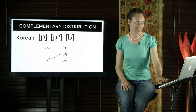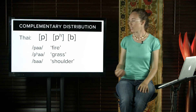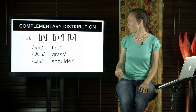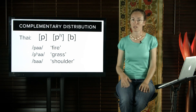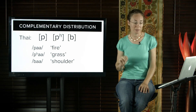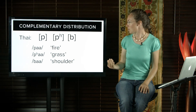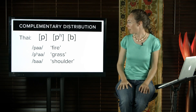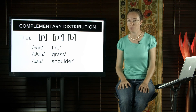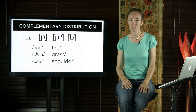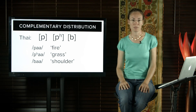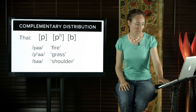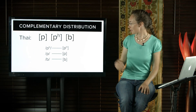In Thai it's a different story again. Thai also has the three sounds p, aspirated p, and b. But in Thai all three make a difference for meaning: p means fire, aspirated p means grass, and 'bah' means shoulder. So all three are separate phonemes in Thai, and the three sounds each divide up into their own distinct phoneme.